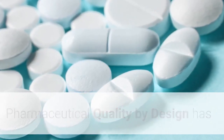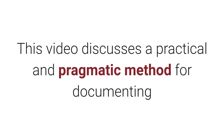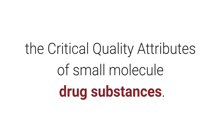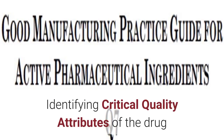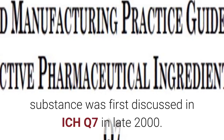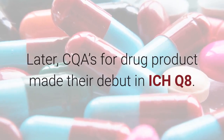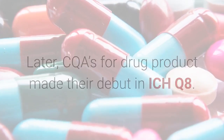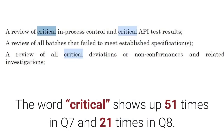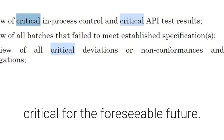Pharmaceutical quality by design has been widely discussed for over a decade. This video discusses a practical and pragmatic method for documenting the critical quality attributes of small molecule drug substances. Identifying critical quality attributes of the drug substance was first discussed in ICH Q7 in late 2000. Later, CQAs for drug product made their debut in ICH Q8. The word 'critical' shows up 51 times in Q7 and 21 times in Q8, making it obvious that the industry would be talking about critical for the foreseeable future.